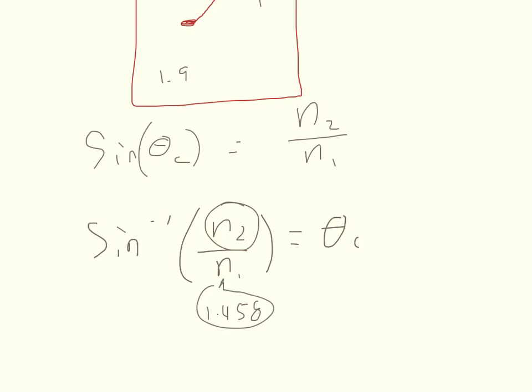The second material that it asks for is flint glass. And flint glass has an index of refraction of 1.66. And the third thing it asks for is the zircone. The zircone is 1.923. And so you just recycle this equation three times, plugging in three different numbers for n1.